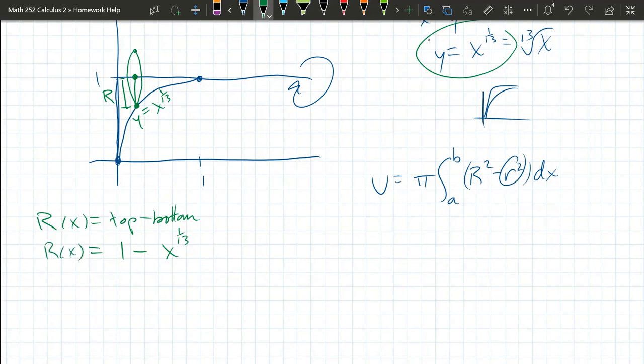And now we're ready to put it into the volume formula. Let's get a and b. x is going to be between a and b. For us, that happens to be 0. The x values go between 0 and 1.